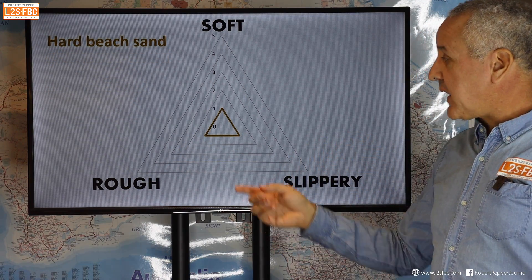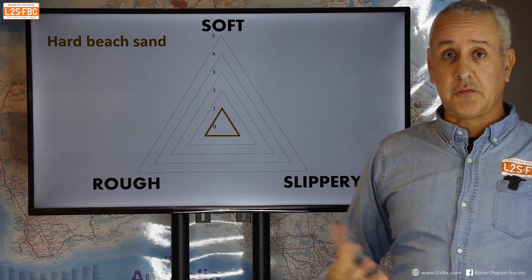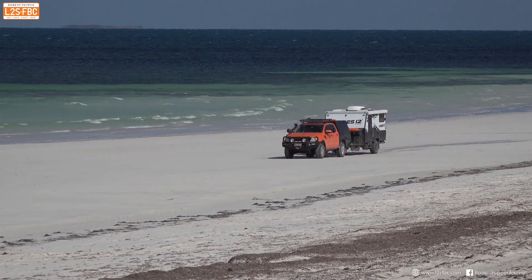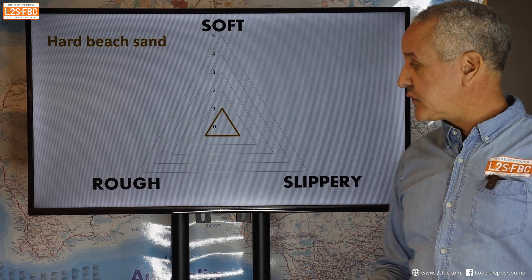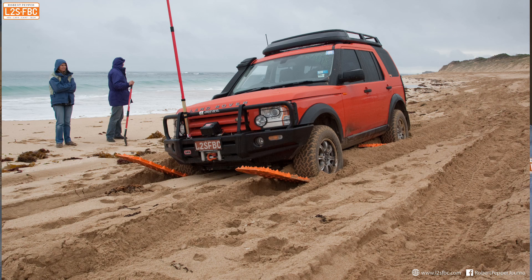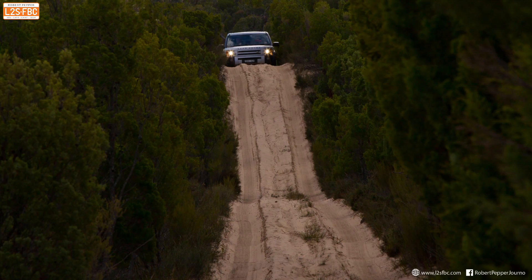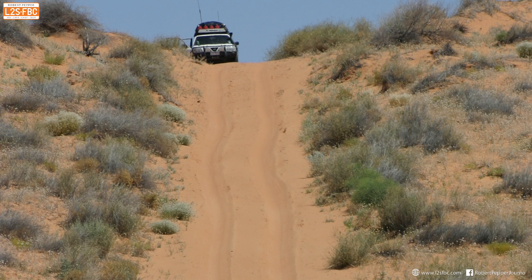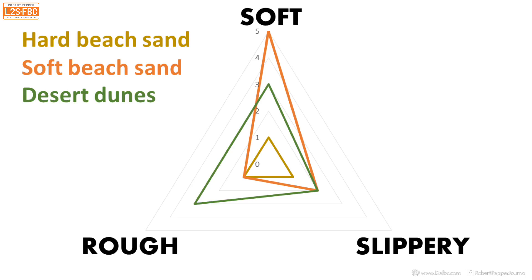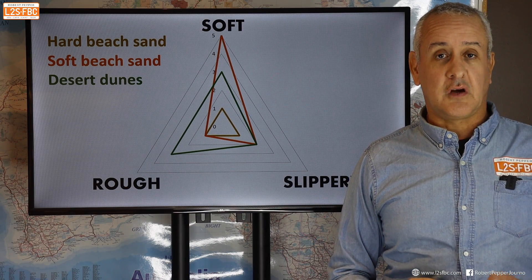Hard beach sand is neither soft, slippery, nor rough — you can drive a two-wheel-drive vehicle on it. Softer beach sand is the opposite: super soft, not slippery, and not rough, because all four wheels are firmly on the ground. Desert dunes like the Simpson Desert, where sand ascents have been chewed up, are actually starting to be quite rough due to ruts, still a bit soft but not really slippery. So sand itself has different types of sub-terrains.